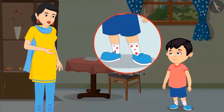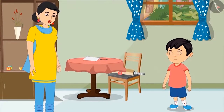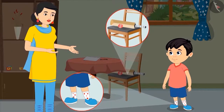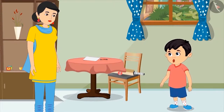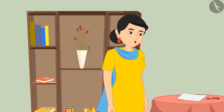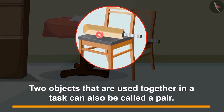Mom says: "Your pair of star socks looks very good." Chotu replies: "Thank you mom. Do you know that just like these socks are in a pair, your bat and ball are also in a pair?" Chotu asks: "But how mom? These socks look the same and I wear them together, that's why they are in pairs. How are the bat and ball in pairs?" Mom explains: "You use the bat and the ball together while playing cricket, don't you? That means two objects which are used together in a task can also be called a pair."